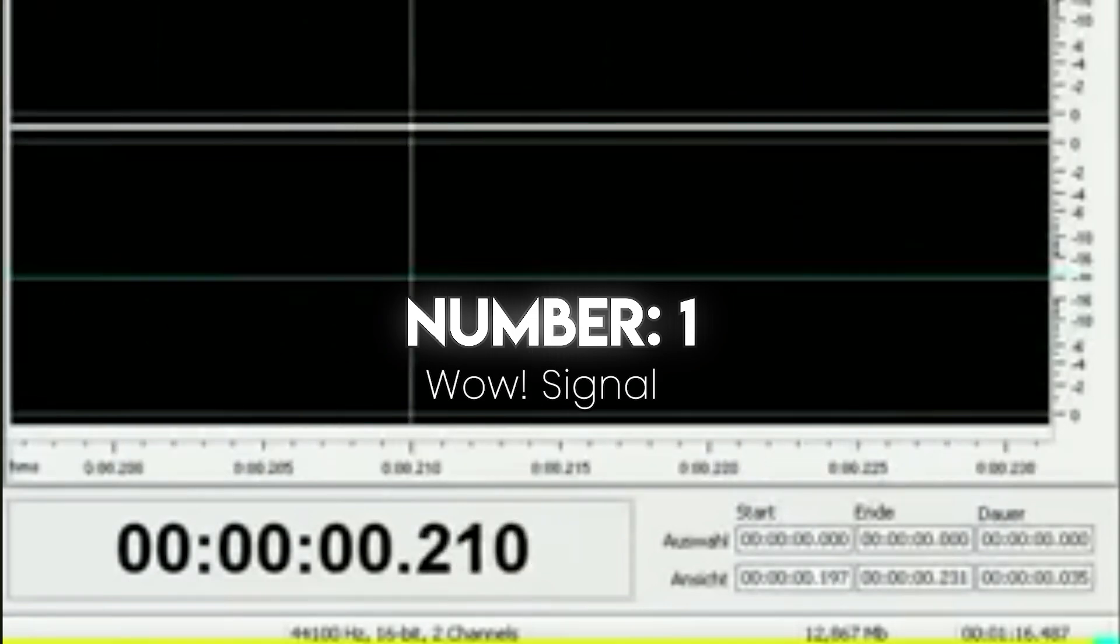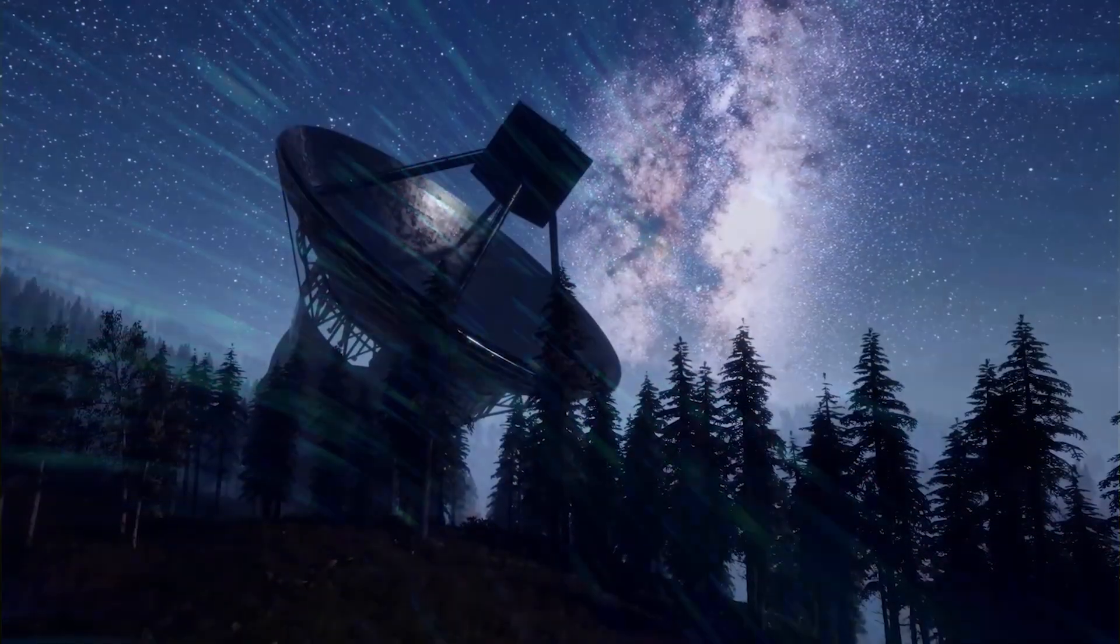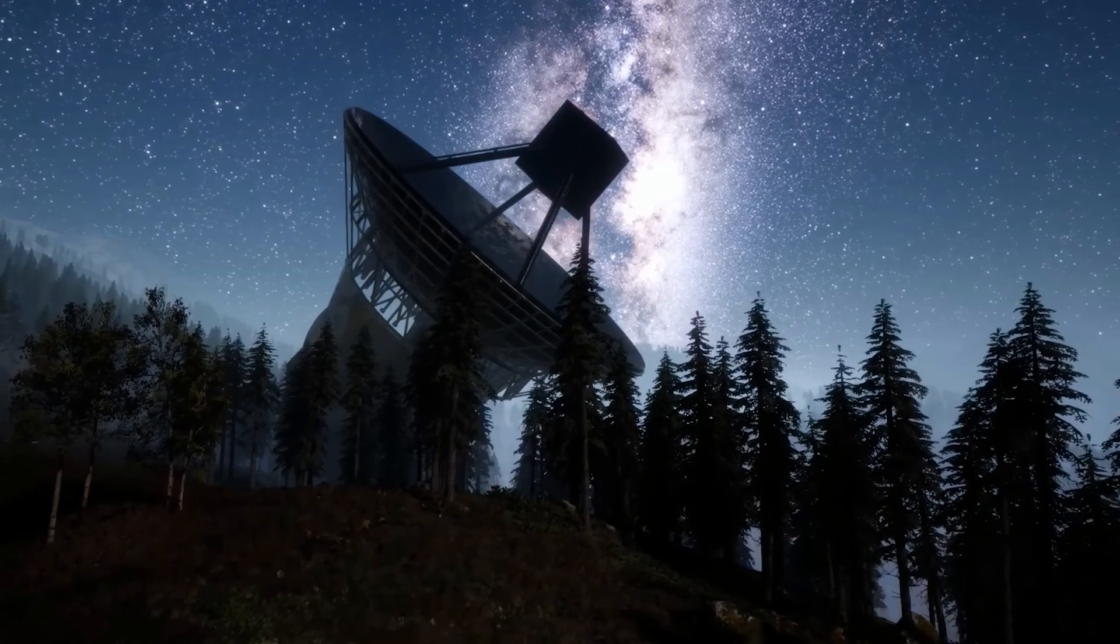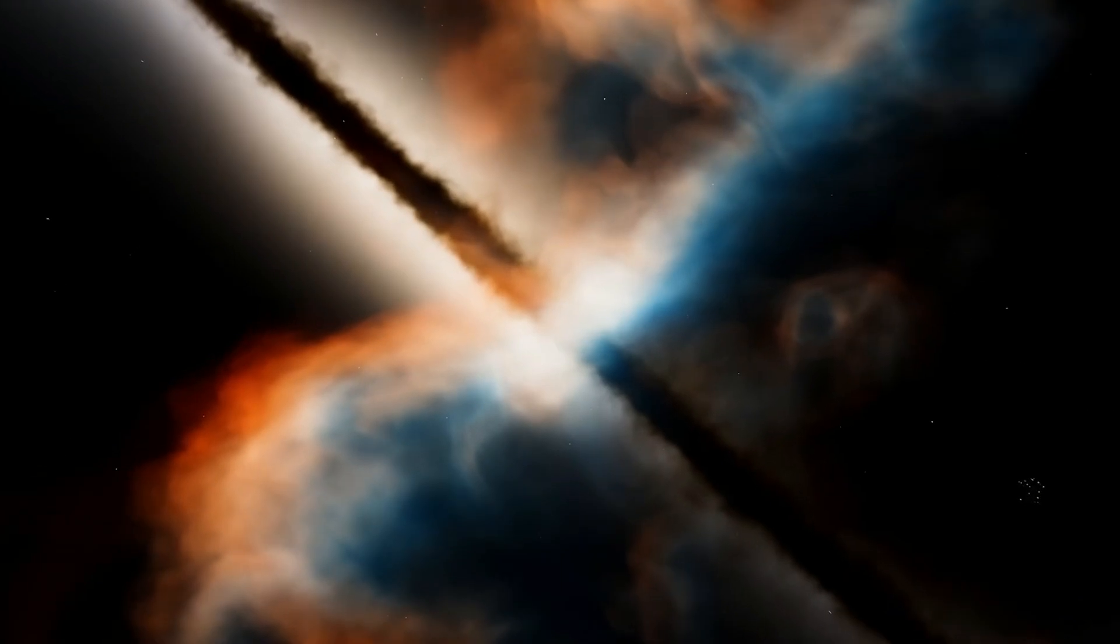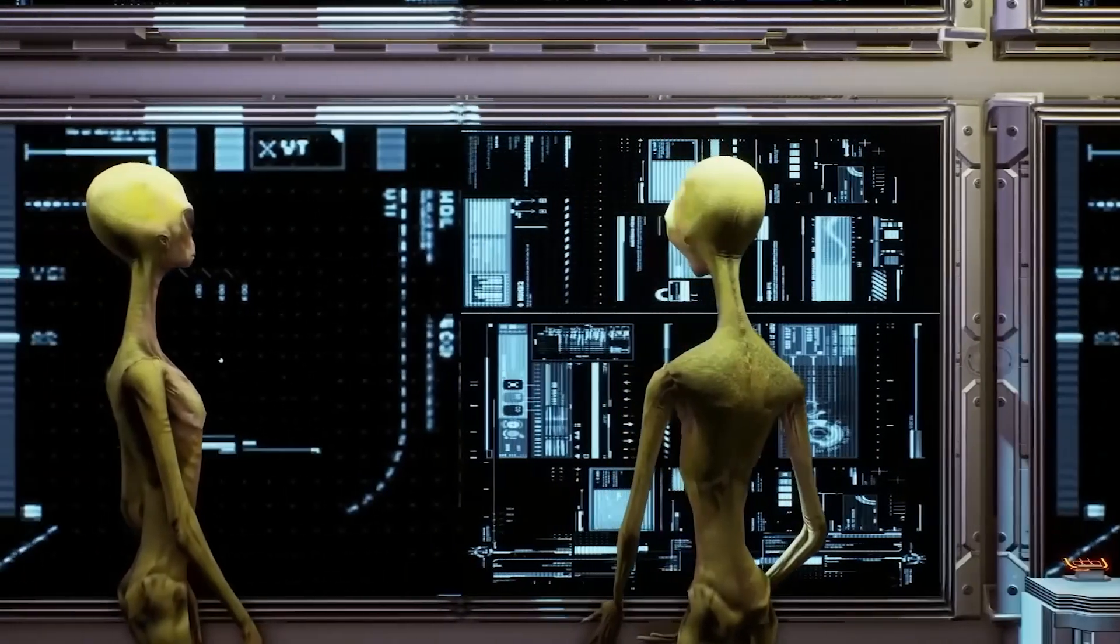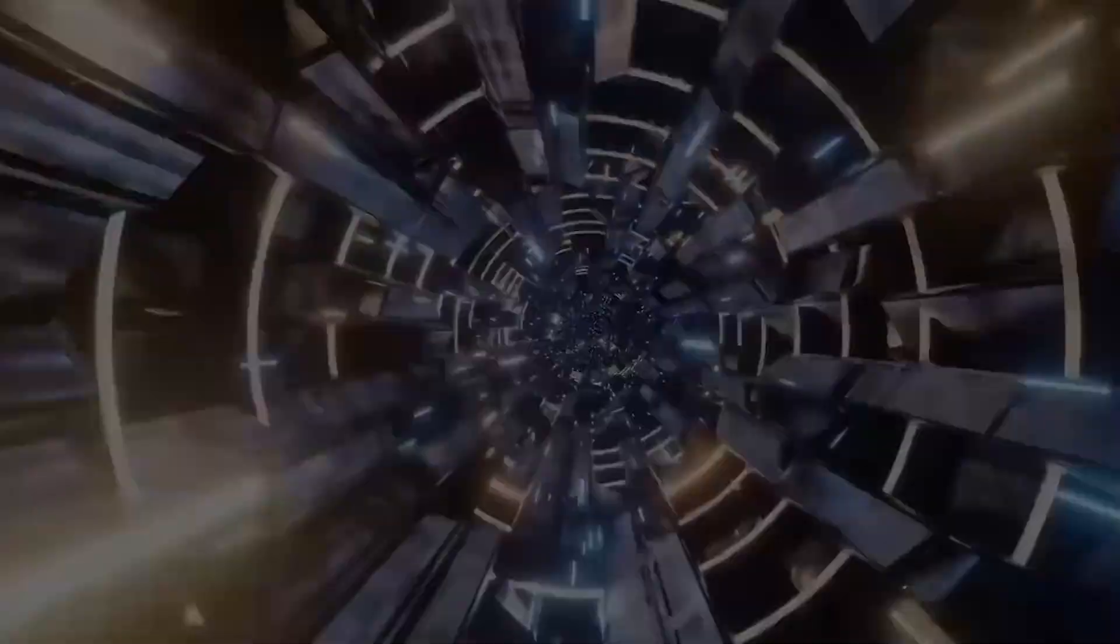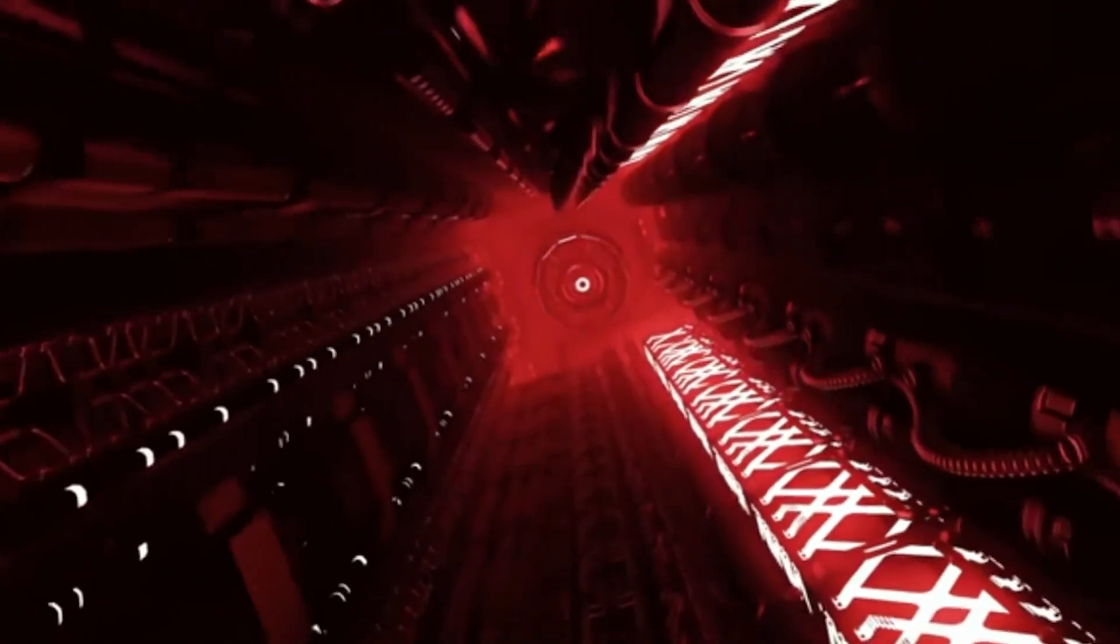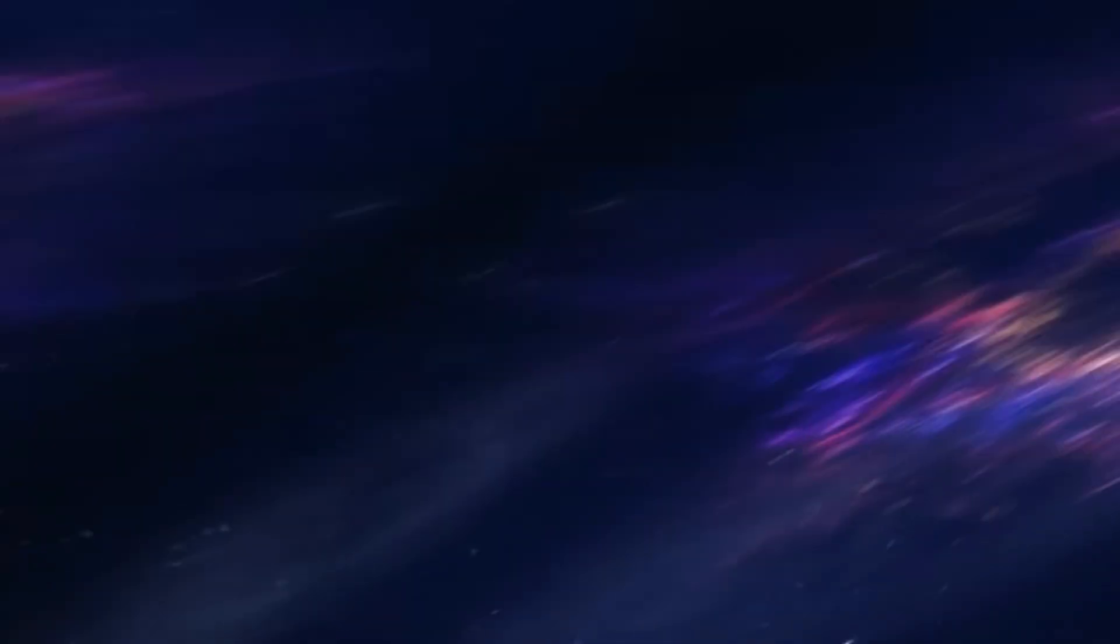Number 1: WOW Signal. August 15th, 1977, the Big Ear radio telescope at Ohio State University picks up a narrowband signal at 1,420 megahertz, the frequency of neutral hydrogen, often dubbed the cosmic water hole where aliens might broadcast. Strength: 30 times above background noise. Duration: 72 seconds. Location: deep space with no known source. Astronomer Jerry Amon circled it on the printout and scribbled WOW.